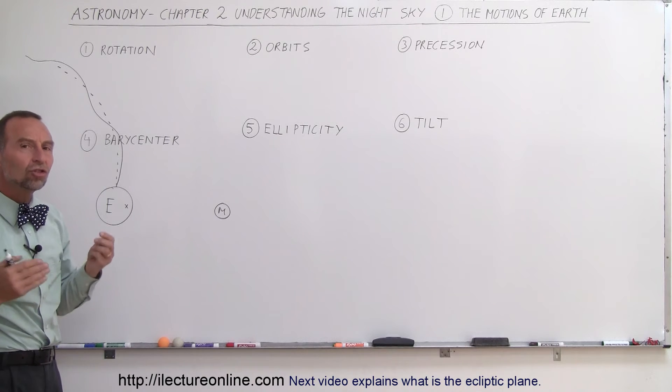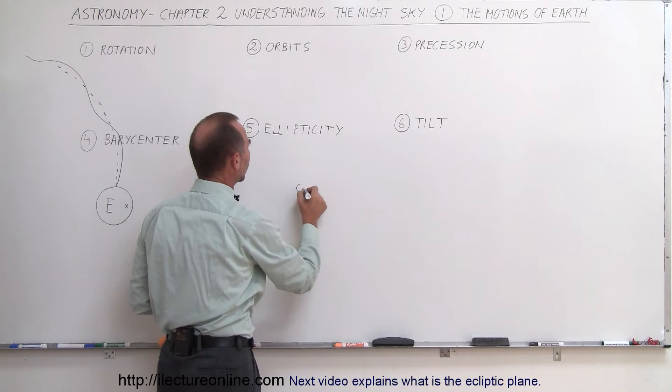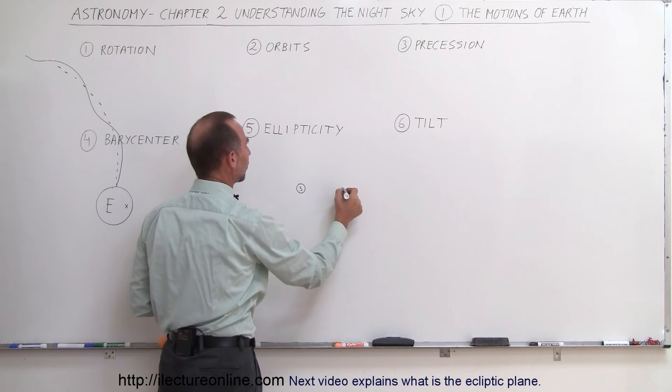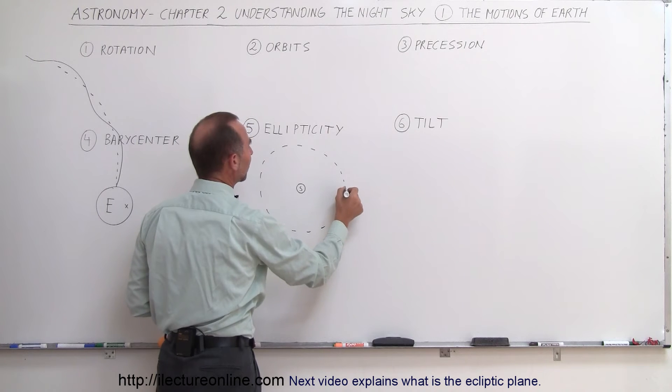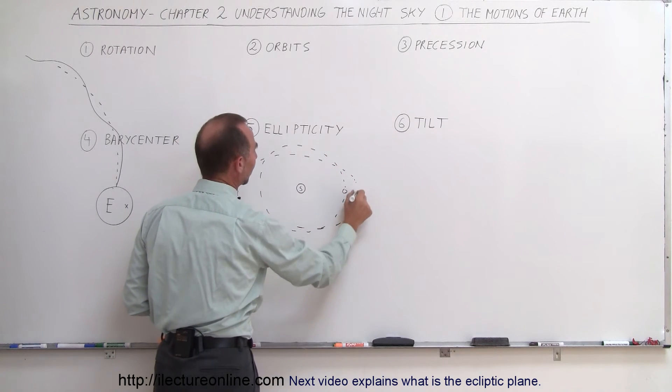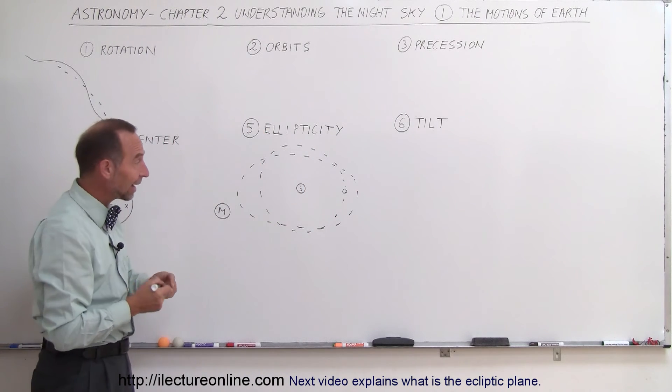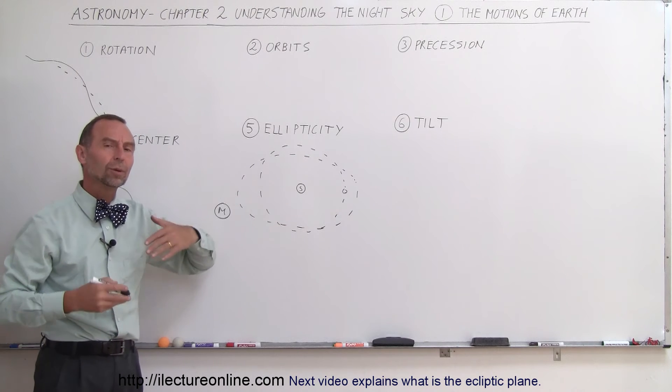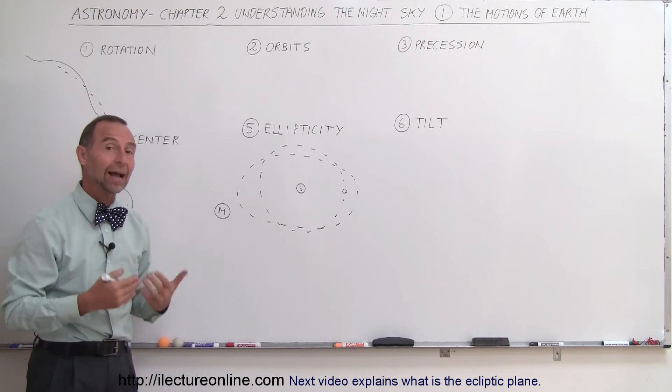The other motion that the Earth has is the change in ellipticity. Sometimes the Earth has an almost circular orbit. If this is the Sun and this is the Earth, sometimes the orbit is almost circular and then other times the orbit will be much more elliptical and it changes back and forth like that. Now of course I've exaggerated the change but it's definitely significant. Matter of fact this change in the Earth orbit, this motion of the Earth, is the primary cause of the current Ice Ages.